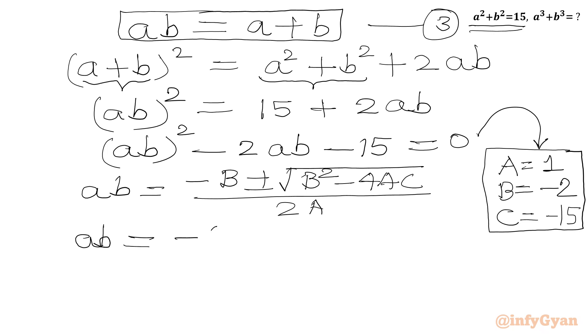Now we have to plug in these three values in our quadratic formula. We will get ab equals minus of minus 2 plus or minus square root of (minus 2)² minus 4 times 1 times minus 15, over 2 times 1.